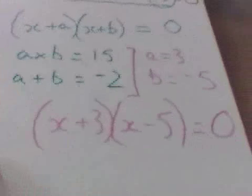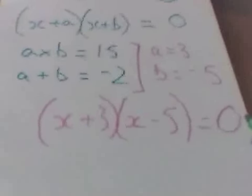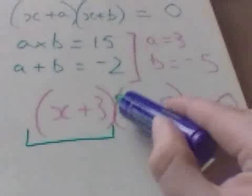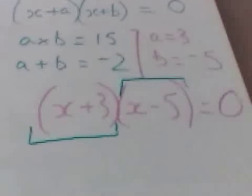Now, what values of x will give us an answer of 0? Well, the only way to get 0 is either this bit comes to nothing or this part comes to nothing.